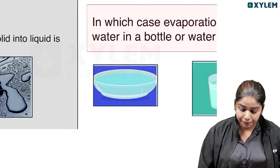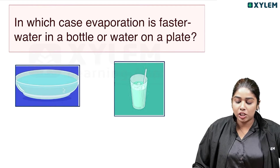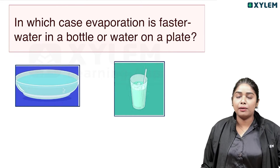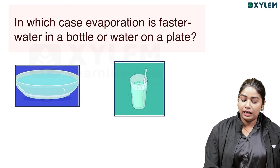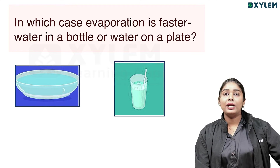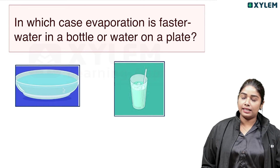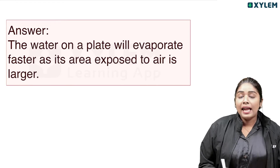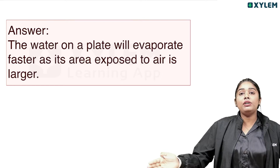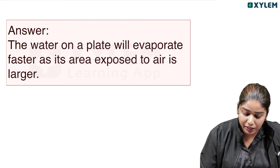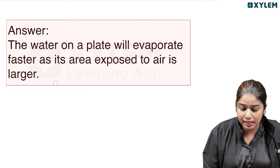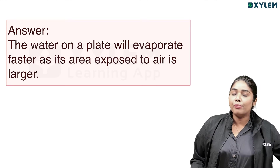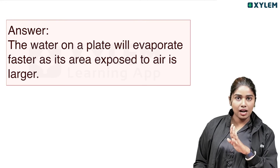Consider water in a bottle versus water on a plate — two conditions. One is a water bottle and one is a plate with water. In this case, evaporation is faster for water on a plate. Water on a plate will be evaporated faster as its area exposed to air is larger — a large surface area means a greater amount of water can evaporate.